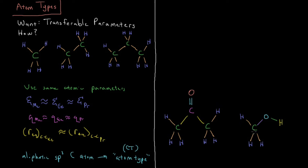Similarly, maybe this carbon has slightly different properties because it's bonded to an OH. But these CH bonds are probably pretty close to the other CH bonds. And this CO bond is probably different than this CO bond — because one is a carbonyl double bond, and the other is an alcohol, a single bond.